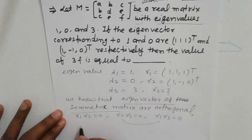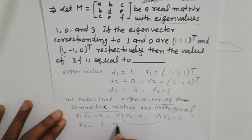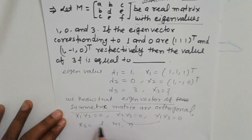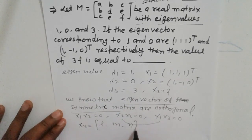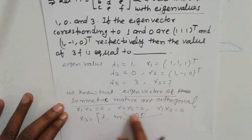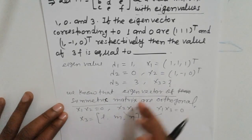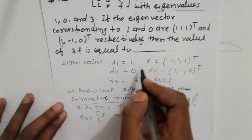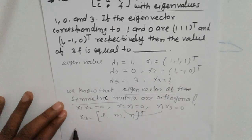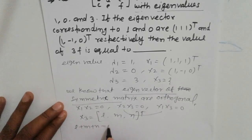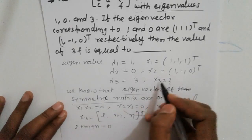Suppose x3 = [L, m, n]. Using the orthogonality condition x1·x3 = 0, we get L + m + n = 0. This is equation 1. Next, simplify using x2·x3 = 0.